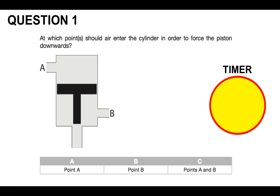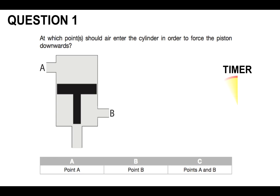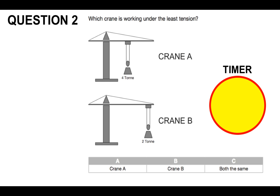Question one: At which point or points should air enter the cylinder in order to force the piston downwards? Point A, point B, or both? You can see the timer on the right-hand side going down, so you don't have that long.